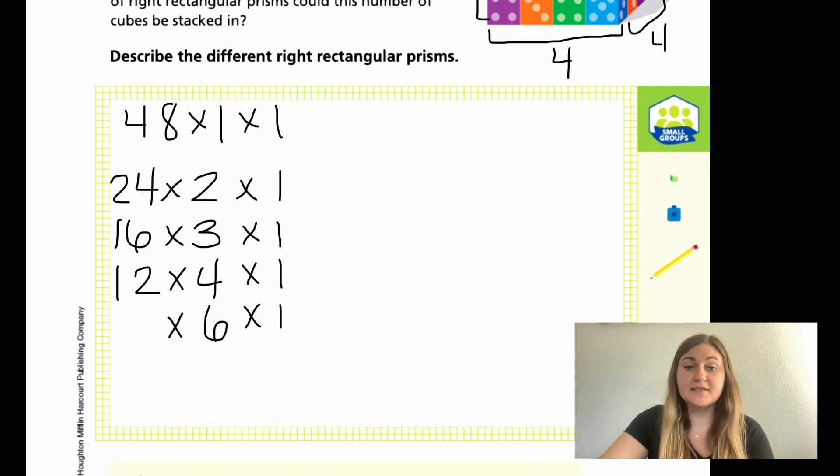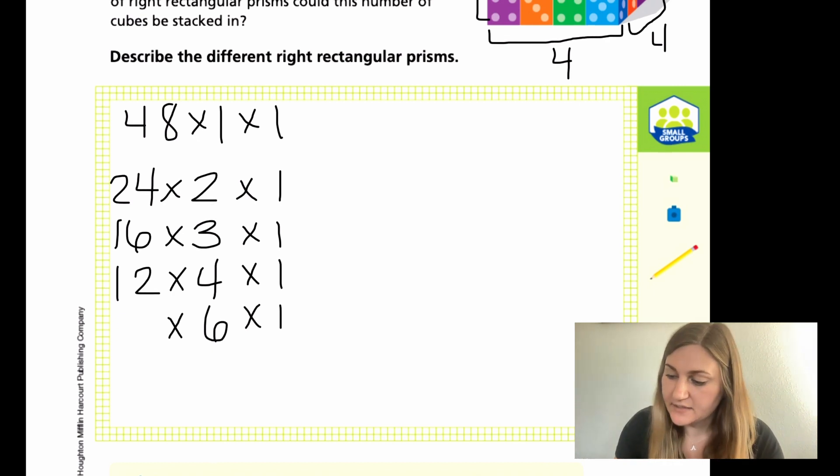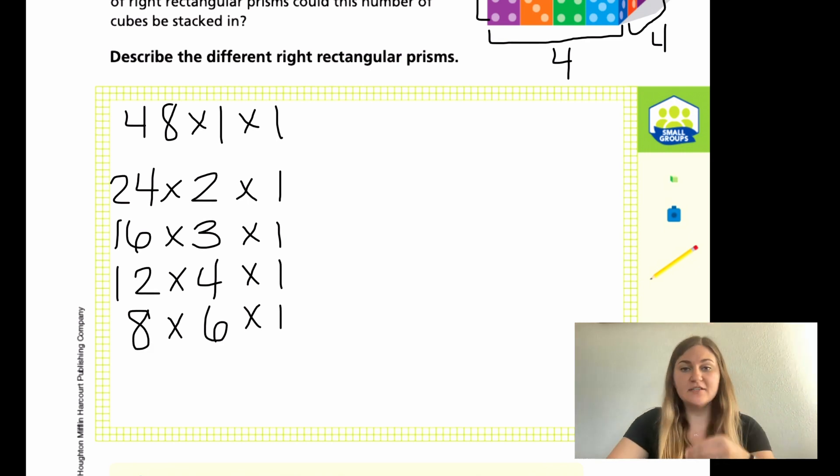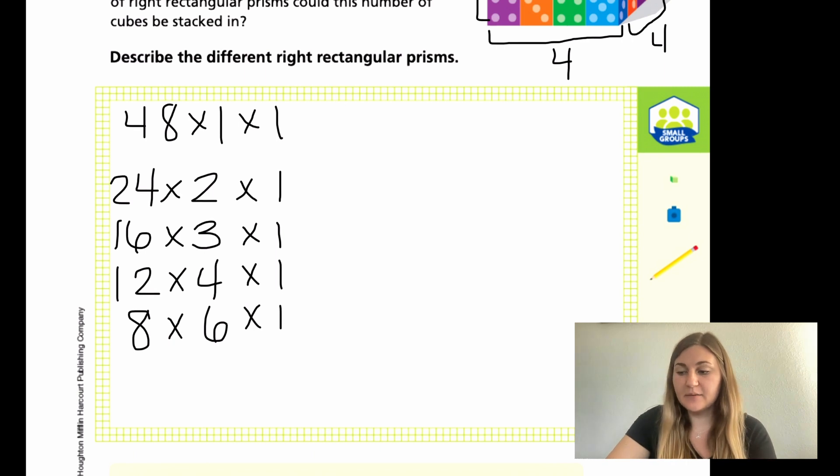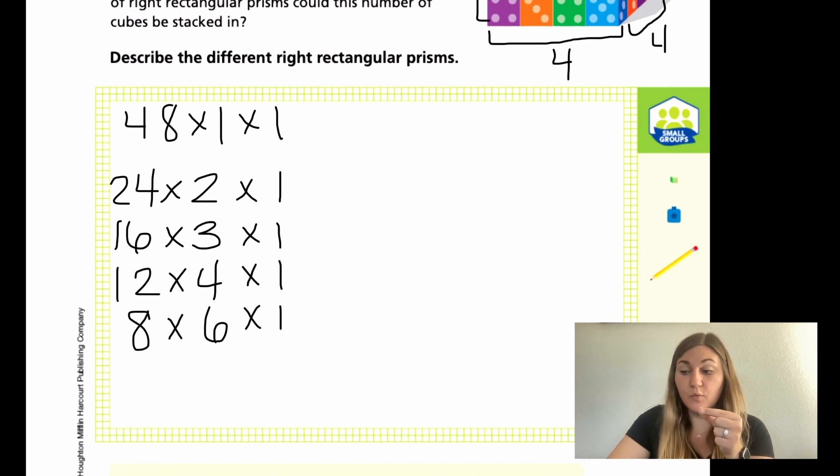I'm going to try my last one as a 6. So 48 divided by 6, that is one of my multiplication rules that I'm supposed to know. 6 times 8 is 48. So now I have 8 tall and I have 6 of them long, still only one wide. And I know that it can't be 7 because 7 times 7 is 49, which is not 48. So that's what it would be with just one width long and all the different variations.